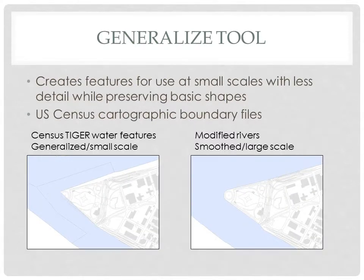The generalized tool creates features for use at small scales with less detail in order to preserve basic shapes, but allows you to modify and eliminate some detail as needed. For example, if you generalize the census TIGER water features at a small scale, you can see that there is more detail than you need and there are some errors in the data as well. The generalized tool allows you to eliminate unneeded lines, simplify the look, and deal with error correction.